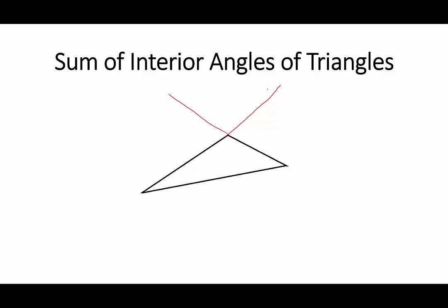By Euclid's fifth postulate, there is a line containing this point that is parallel to this side of the triangle.